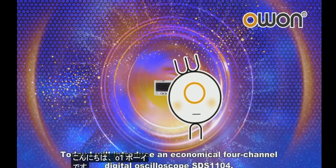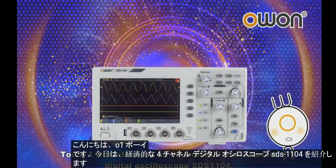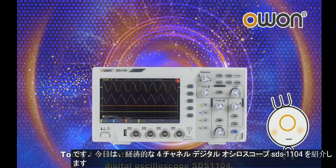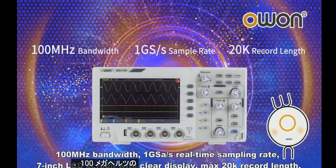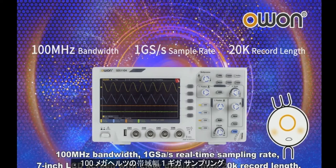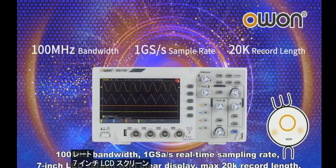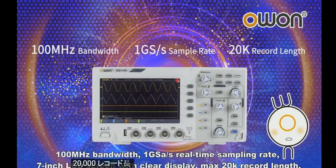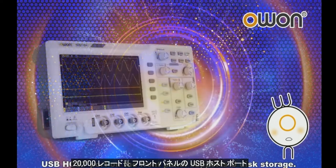Today I will introduce an economical four-channel digital oscilloscope, the SDS-1104, featuring 100 megahertz bandwidth, 1 giga sampling rate, 7-inch LCD screen with clear display, max 20,000 record length, and USB host port on the front panel supporting USB disk storage.